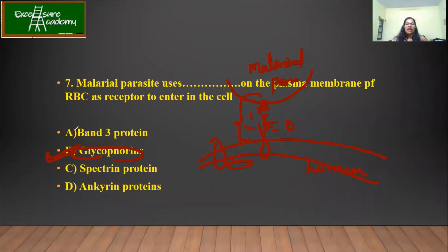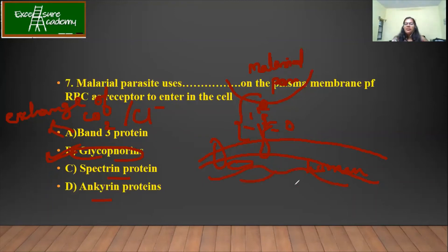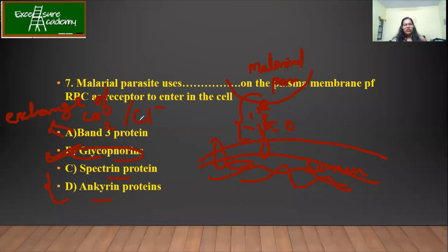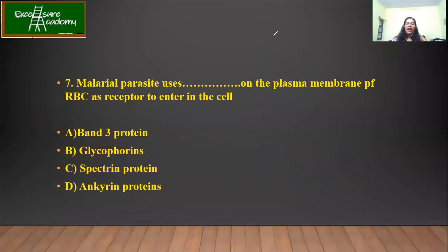Band 3 proteins help in the exchange of CO2 and chloride ions — we will study this in detail. Spectrin and anchoring proteins are peripheral proteins that help in holding the structure of the RBC. Just like bamboos support the floors of a building, these proteins provide structural support to the cell. So the correct answer is that the malarial parasite uses glycophorines on the plasma membrane of the RBC to enter the cell.